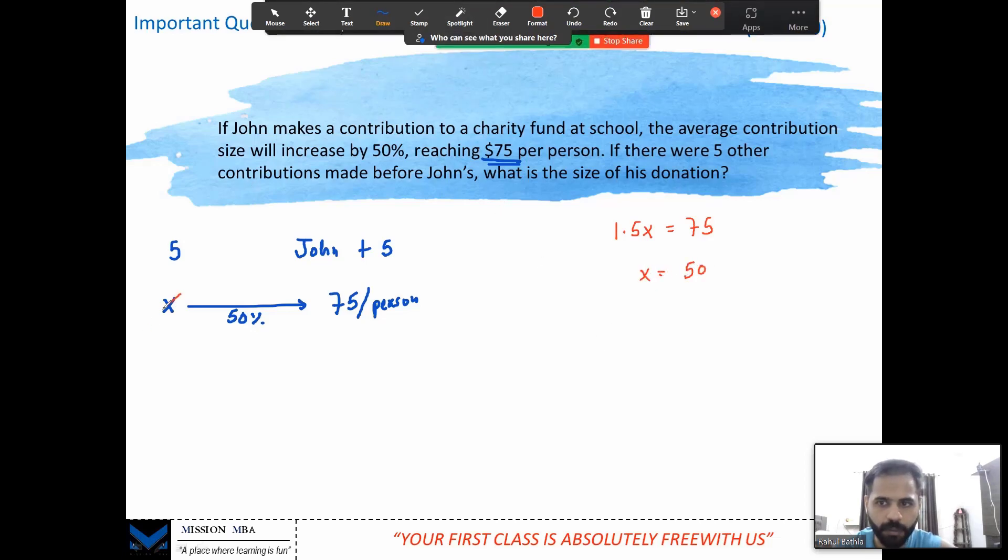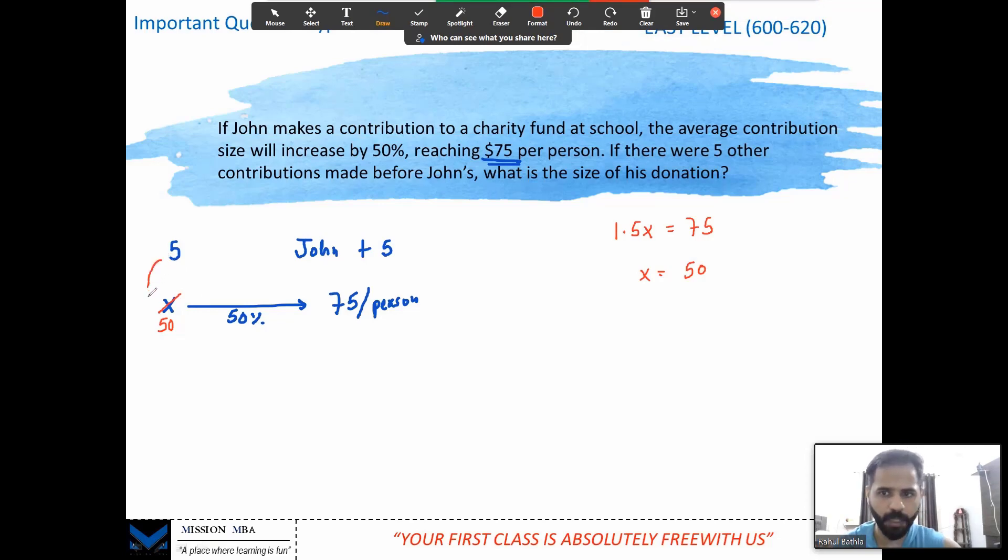Now the game is quite simple. This is not x for me; this is 50 for me. Now guys, the game is over. Earlier the contribution, what was the total contribution? 5 multiply by 50, that gives me 250 dollars. This was without John. What is the contribution now? 75, and how many total people? John and five, making it six. Six into 75, how much? It's 450.